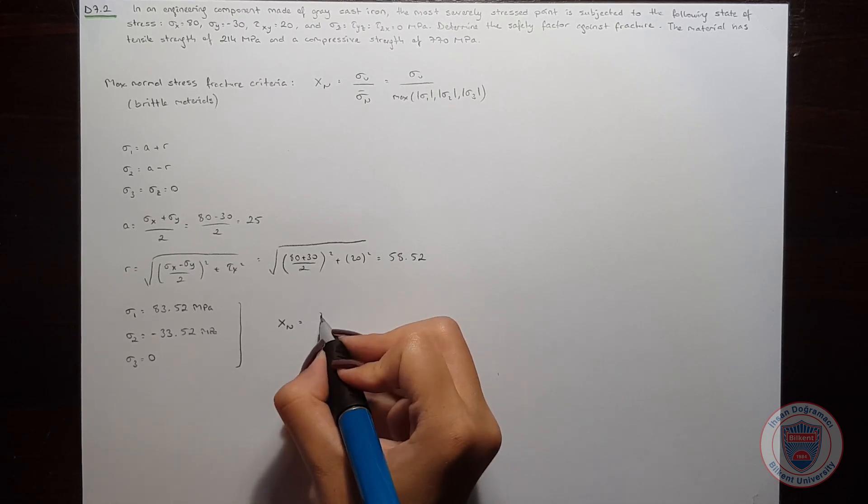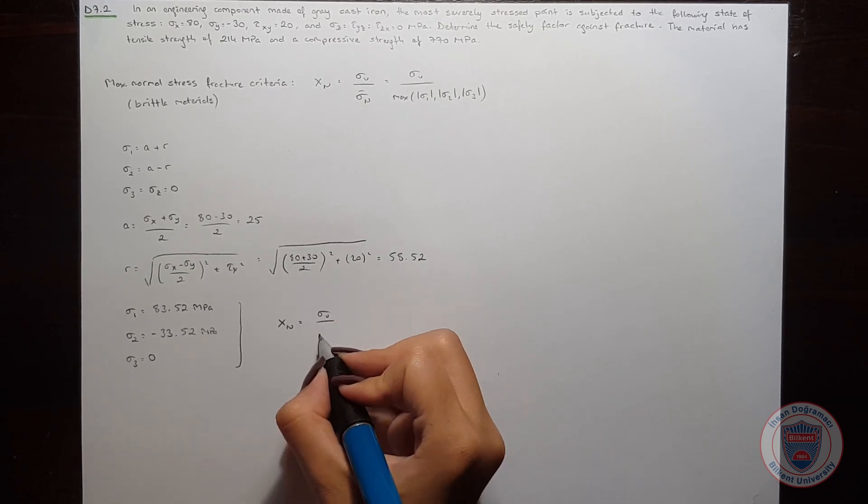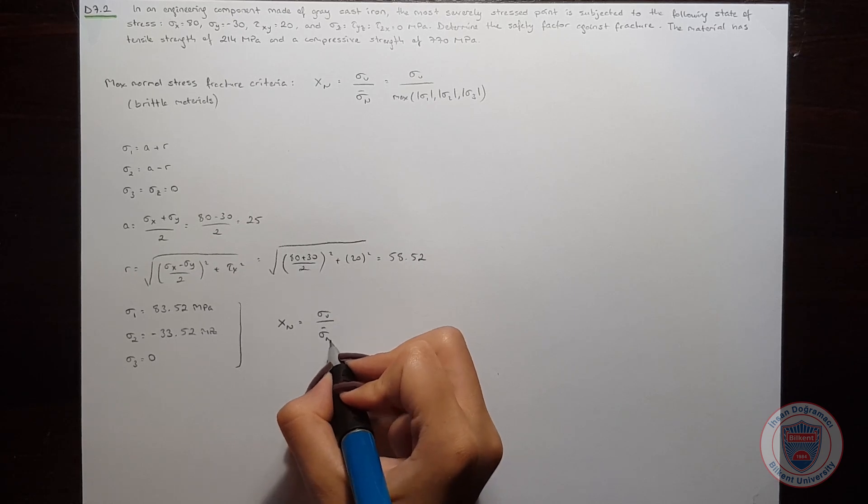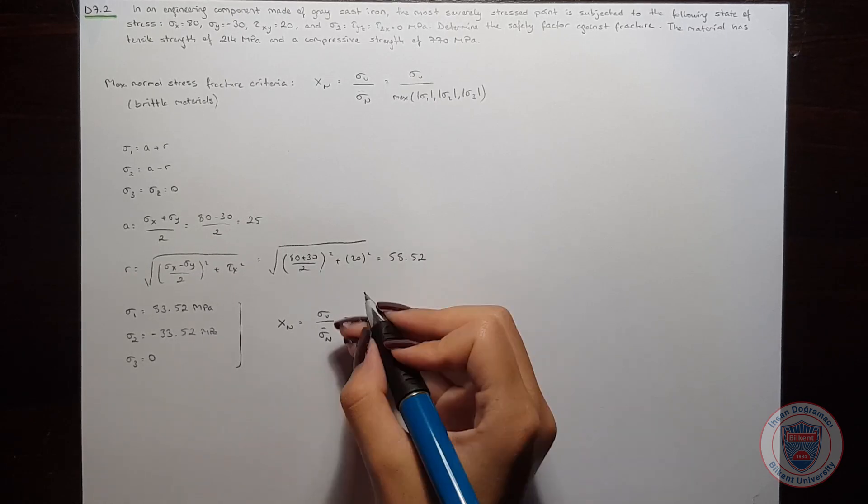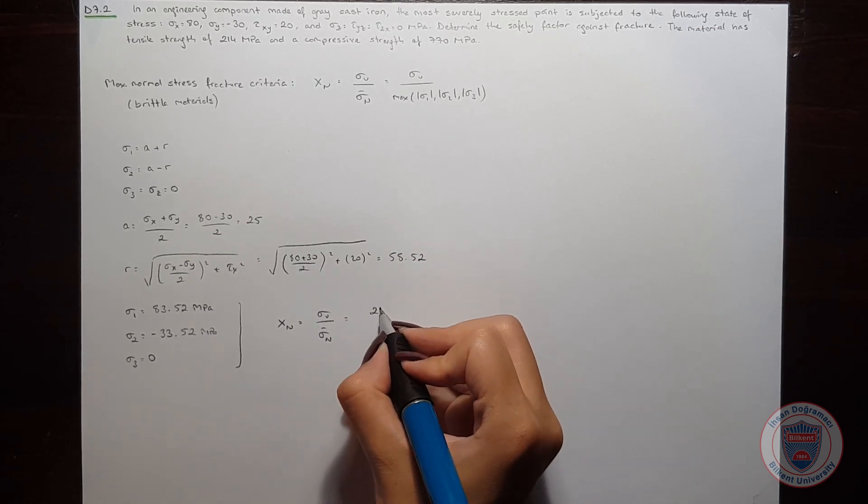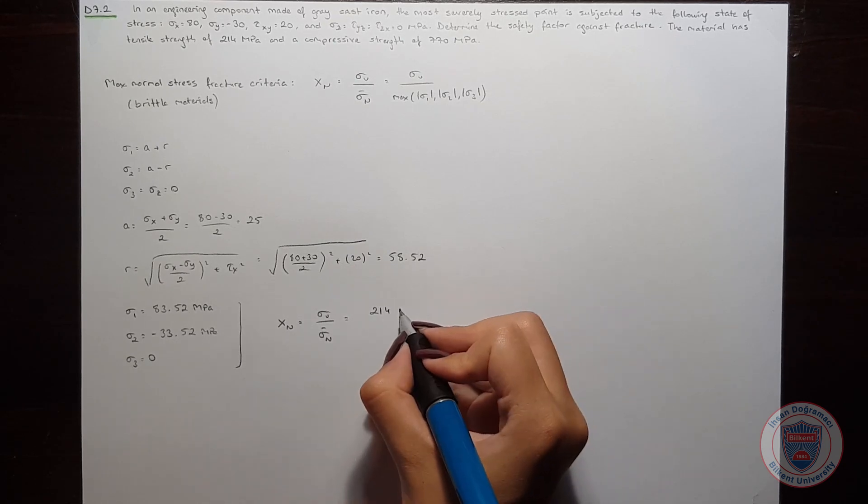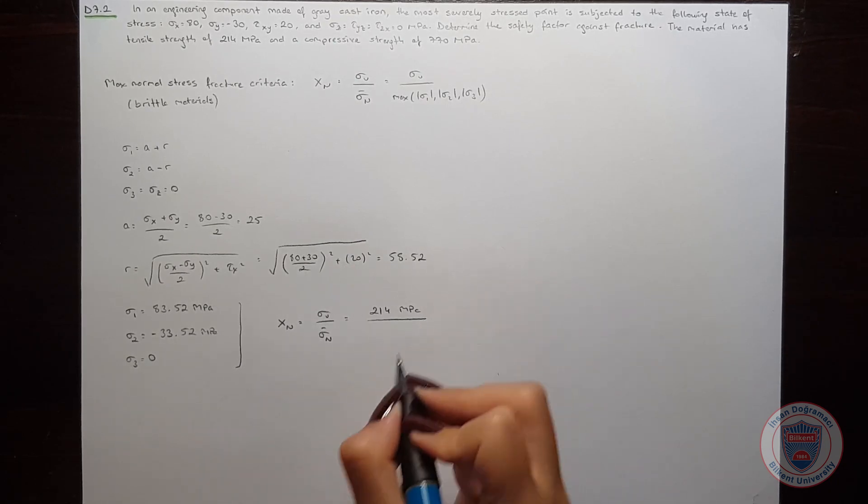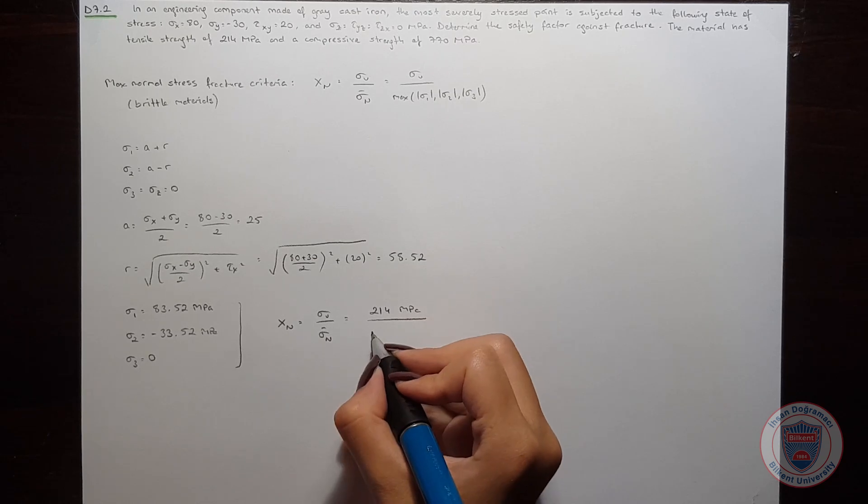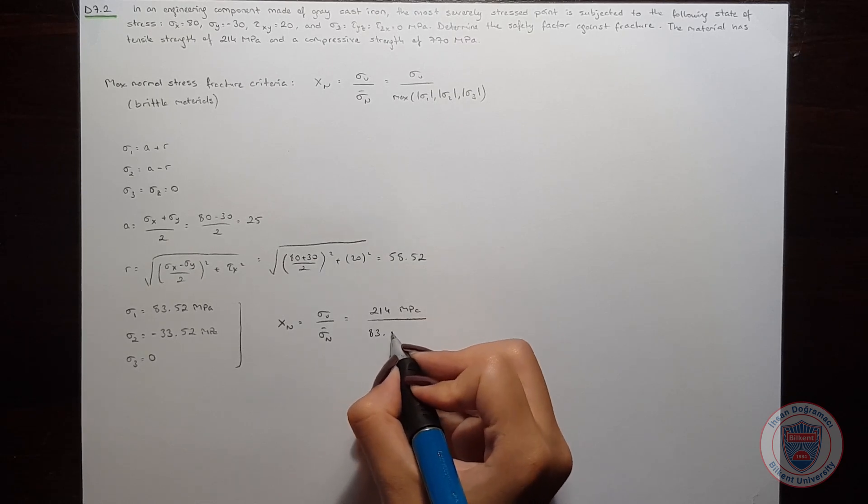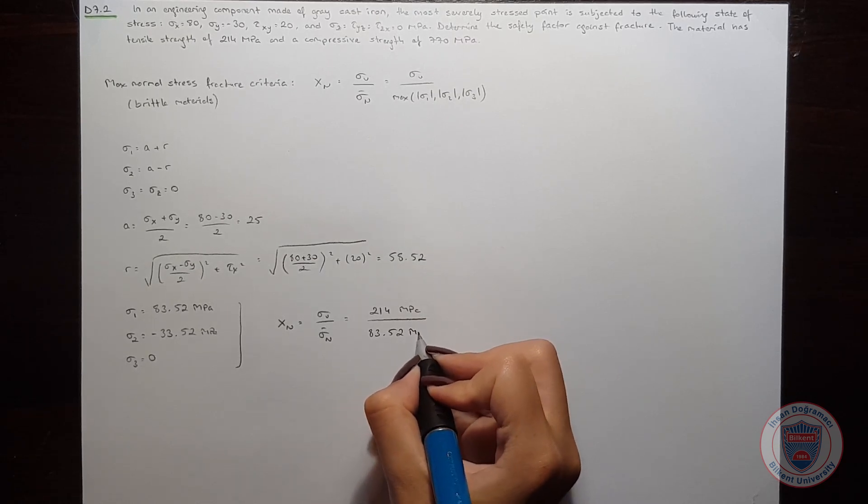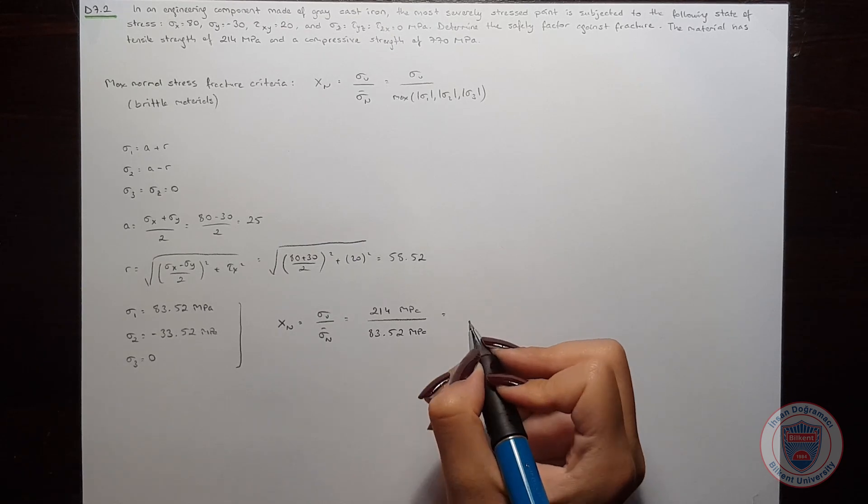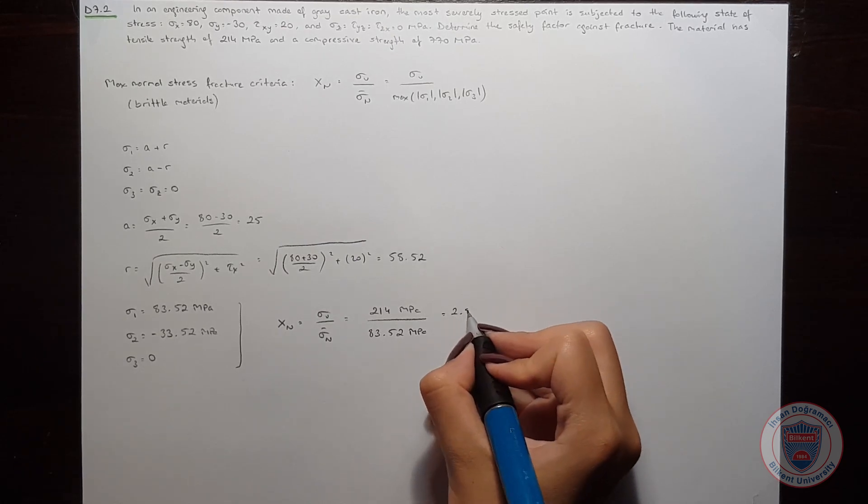So the safety factor will be sigma u over sigma n, which is 214 MPa over 83.52 MPa. And this gives 2.56.